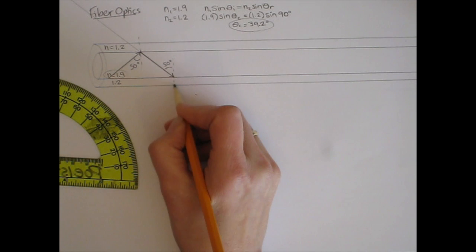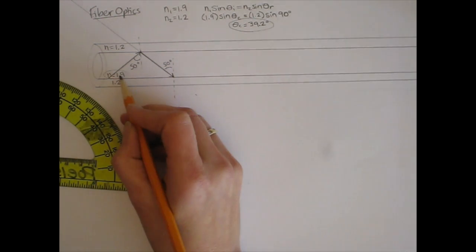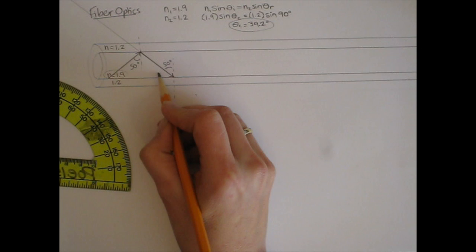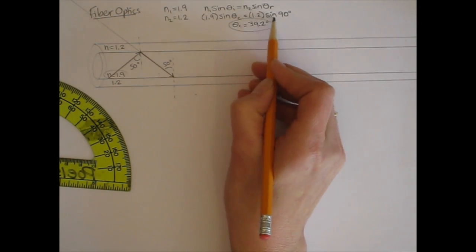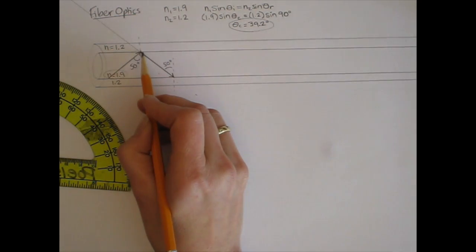Well, what's the critical angle for this boundary? Well, it's incident in the 1.9 material, and it's going to the 1.2 material. So it's the same exact boundary that we had at the top of the core.